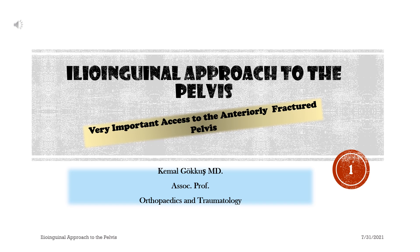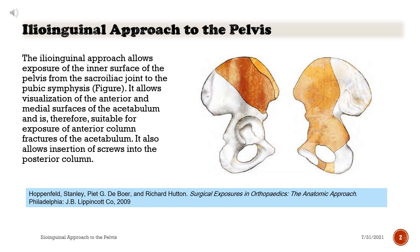The ilioinguinal approach to the pelvis is a very important access to the anteriorly fractured pelvis. It allows exposure of the inner surface of the pelvis from the sacroiliac joint to the pubic symphysis, and allows visualization of the anterior and medial surfaces of the acetabulum. It is therefore suitable for exposure of anterior column fractures of the acetabulum.